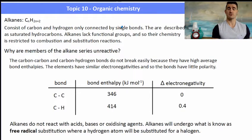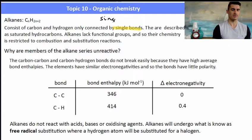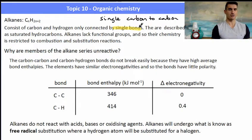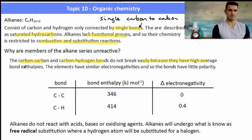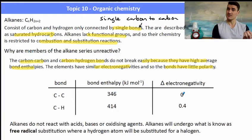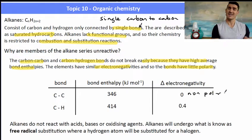Alkanes belong to the homologous series where they're connected by only single carbon-to-carbon bonds — make sure you say single carbon-to-carbon bonds. They're described as saturated because they have the maximum number of carbon-hydrogen bonds. Alkanes lack functional groups, so their chemistry is strictly restricted to combustion and substitution reactions. They're generally fairly unreactive. The carbon-to-carbon and carbon-to-hydrogen bonds do not break easily — they have a high bond enthalpy. They also have similar electronegativity, meaning it's not an overly polar bond, so a carbon-to-carbon bond is a relatively strong, non-polar covalent bond.